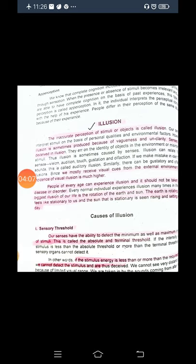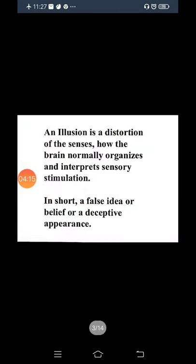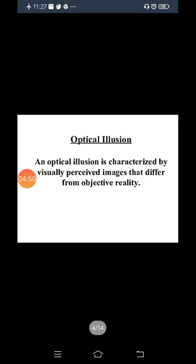Now coming towards the causes of illusion. A core definition: illusion is a distortion of senses — how the brain normally organizes and interprets sensory stimulation. In short, a false idea or belief, or a deceptive appearance. An optical illusion is characterized by visually perceived images that differ from objective reality, which is why it is called an optical illusion.